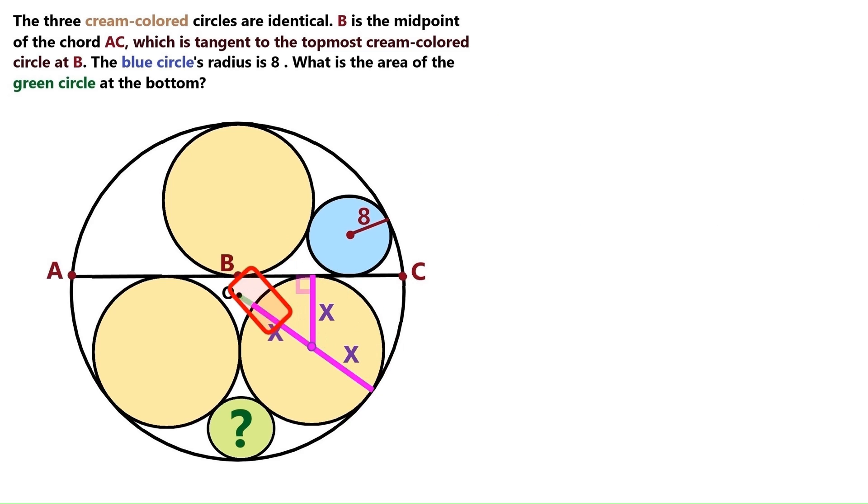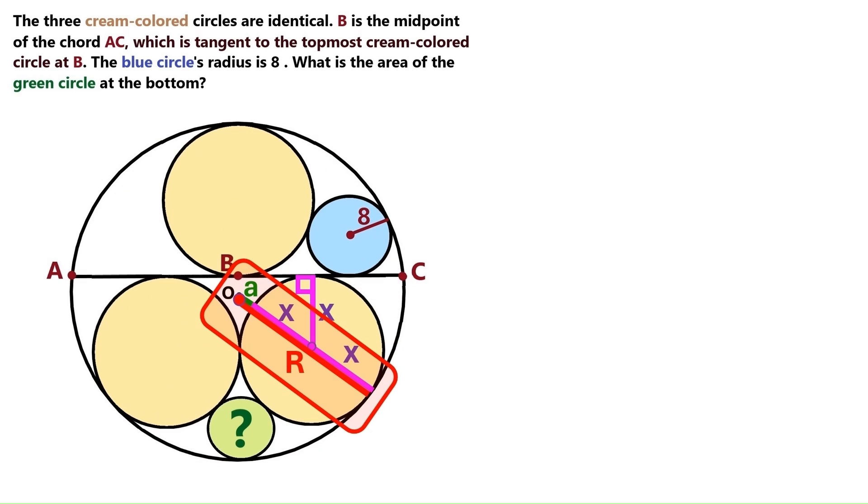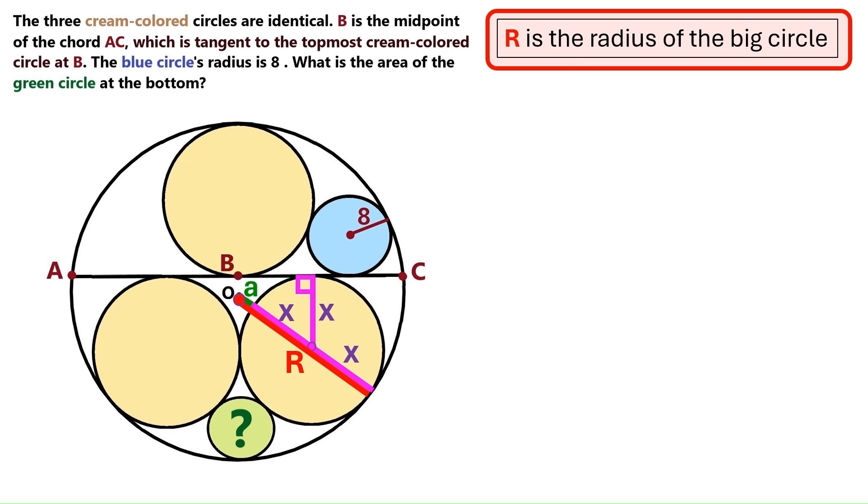Next, we'll put this tiny green line here connecting the radius x to the big circle's center, and we'll call it a. It's clear that these line segments here add up to the radius of this big circle, and we'll call it capital R. Let's write that up here so that we don't forget what capital R is. And we can conclude that capital R is 2x plus a, and we'll also write that up here.